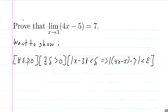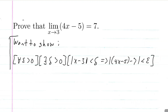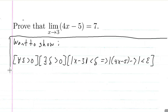If I can show that for every epsilon greater than 0, there exists a delta greater than 0 such that the absolute value of x minus 3 is less than delta implies the absolute value of 4x minus 5 minus 7 is less than epsilon, then we're good to go. This is actually not part of the proof — this is just what I want to show.